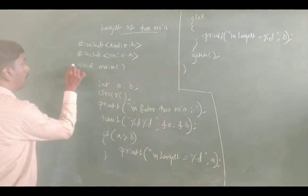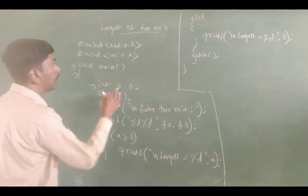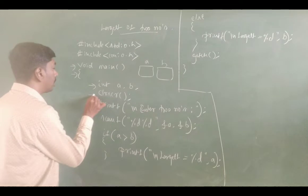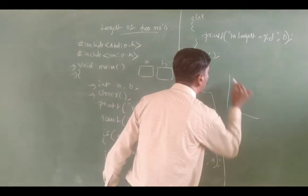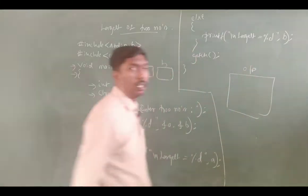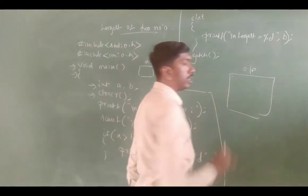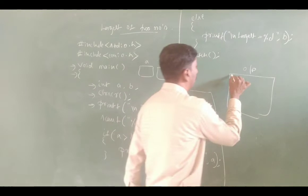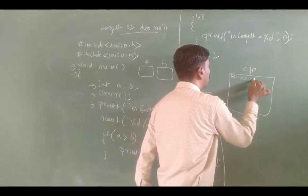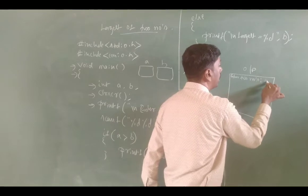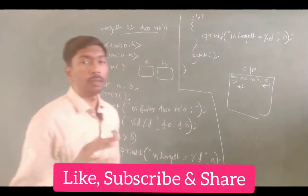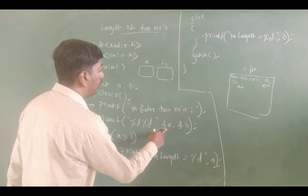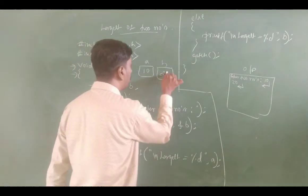Execution starts from void main. Integer A and B — memory blocks are created. Clrscr clears the output screen; the cursor moves to the top left corner. Printf prints 'Enter two numbers'. The user types 10 then enter, 20 then enter. Scanf reads the values: first one is stored in A, second one in B. So A = 10, B = 20.